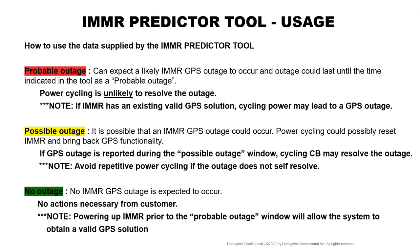Yellow indicates possible outage, meaning it is likely that an IMMR GPS outage could occur shortly. Power cycling could possibly reset the IMMR and bring back GPS functionality. If a GPS outage is reported during the possible outage window, cycling the circuit breaker could likely resolve the outage. Please note to avoid repetitive power cycling if the outage does not self-resolve.